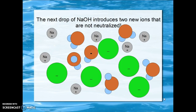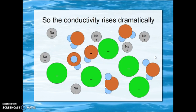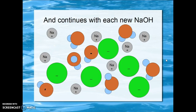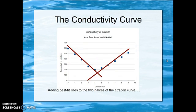The next drop of sodium hydroxide has no more hydrogen ions to react with, so it introduces two new ions, the sodium and the hydroxide ions that are not neutralized. We would expect and we see that the conductivity rises dramatically after the equivalence point. The equivalence point was that point at which all the hydrogen ions have been neutralized by sodium hydroxide and there is no excess sodium hydroxide. By adding another drop of sodium hydroxide we have excess sodium hydroxide ions in the solution. This continues as we add each new drop of sodium hydroxide and the conductivity then goes up with each drop, giving us this conductivity curve.